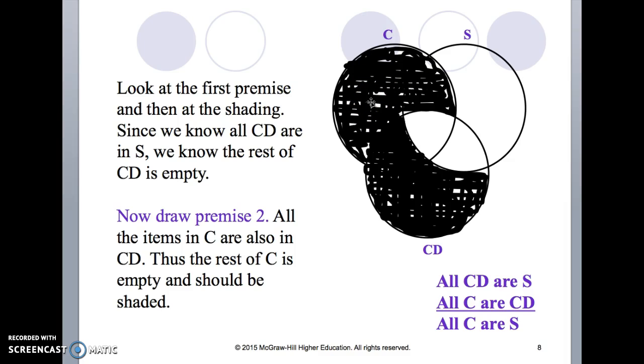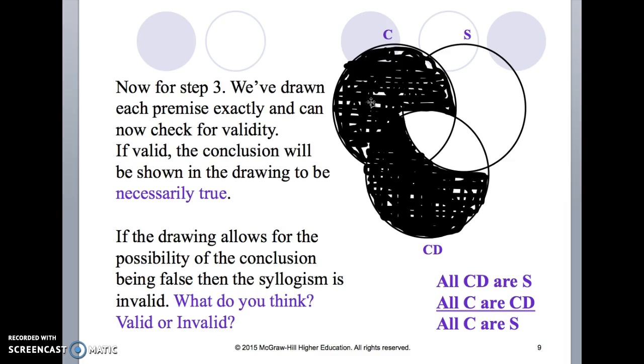We look and we see C circle, S circle, and is there anything that's outside of the S circle that's a C? If the answer is no then this argument is indeed valid.